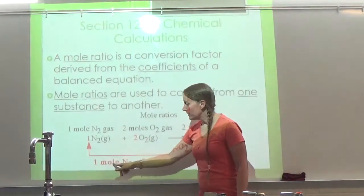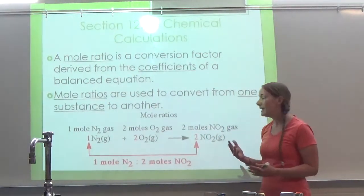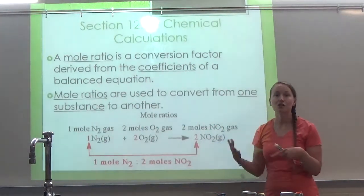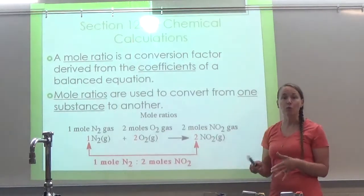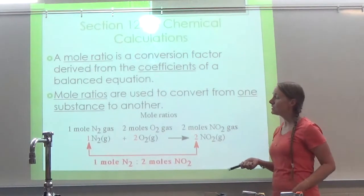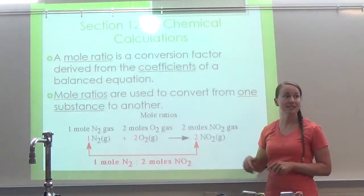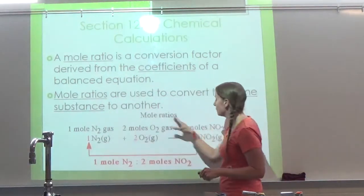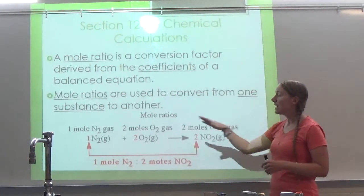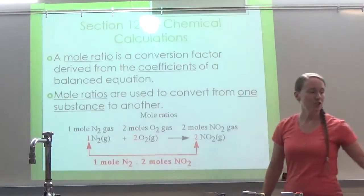We can say one mole of N₂ is going to equal two moles of NO₂, which means I can get a starting amount and figure out how much product I should make. If you remember back in chapter 10, we learned some conversion factors about moles: one mole equals 6.02 times 10 to the 23 representative particles, one mole equals molar mass, one mole equals 22.4 liters. The mole ratio allows us to go between different substances — we can take a starting substance and get to an ending substance.